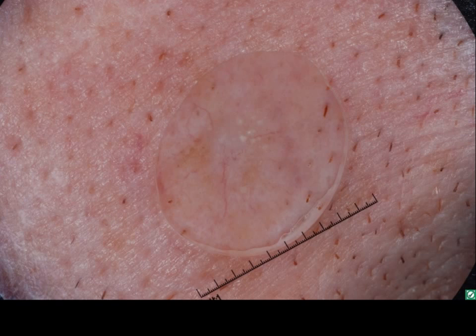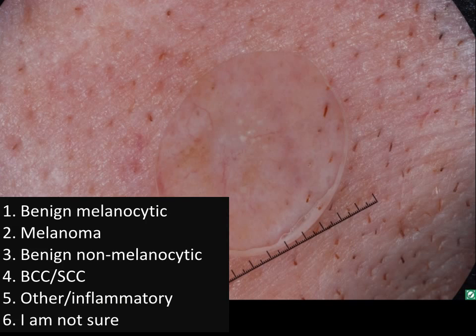This is the dermoscopy view of the lesion. Here's your differential between a benign melanocytic lesion, a melanoma, a benign non-melanocytic lesion, a basal cell carcinoma, squamous cell carcinoma, or other/inflammatory.